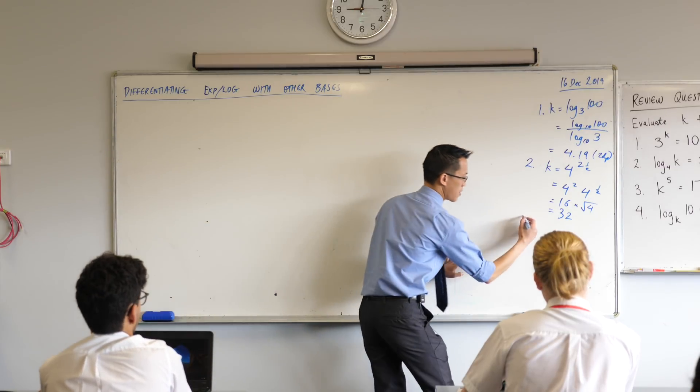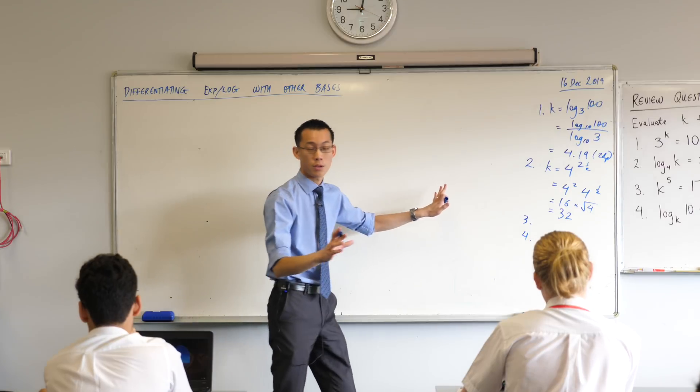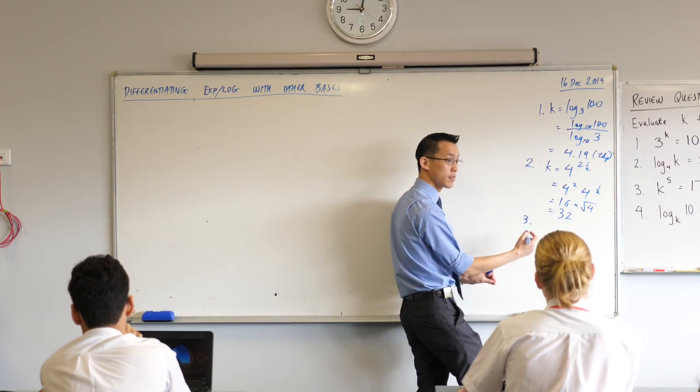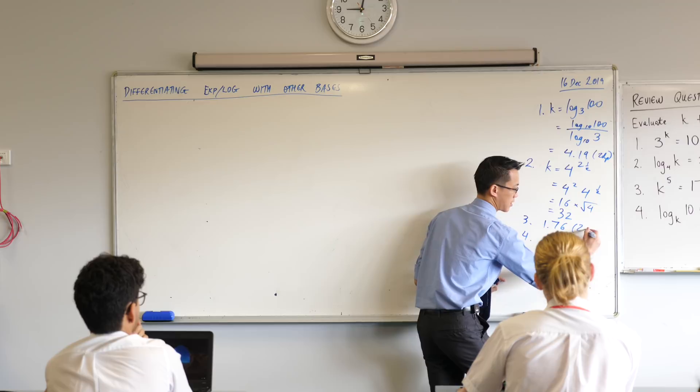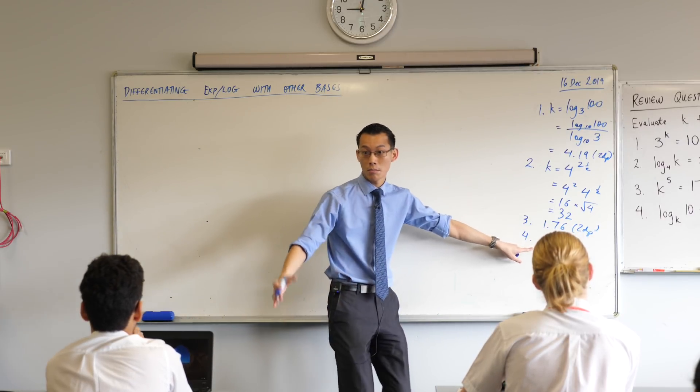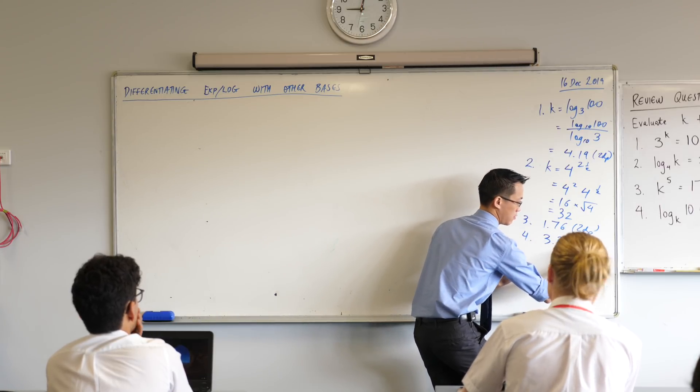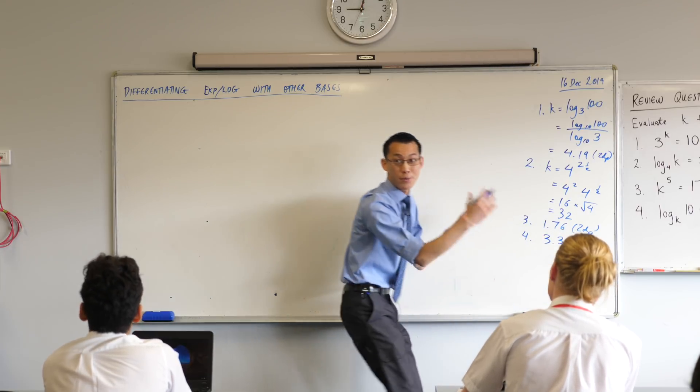Can I just quickly, rather than worry about the working for these, can I just get the answers for 3 and 4, just so we can confirm and I can see if anyone's got problems? Edison, what have you got for 3? 1.76. 1.76, can I please get some agreement or disagreement on that? Okay, I've got some nods, great. Aditya, do you want to give me the last one? 3.32. 3.32. Are we all so similarly happily with that? Yep, okay.